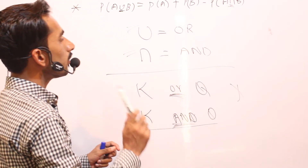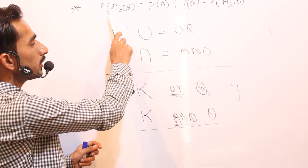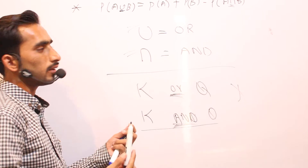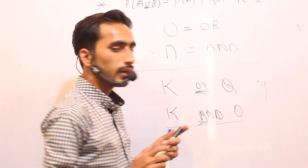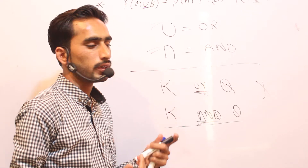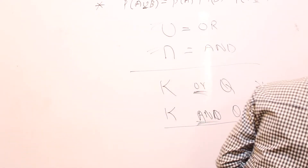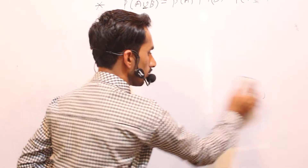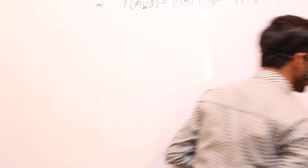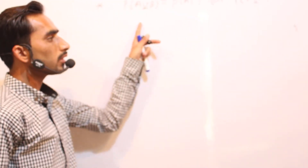Now we are going to talk about how the addition rule is derived. We are going to prove it using the Venn diagram. The best way of solving this is to use the concept of the Venn diagram.